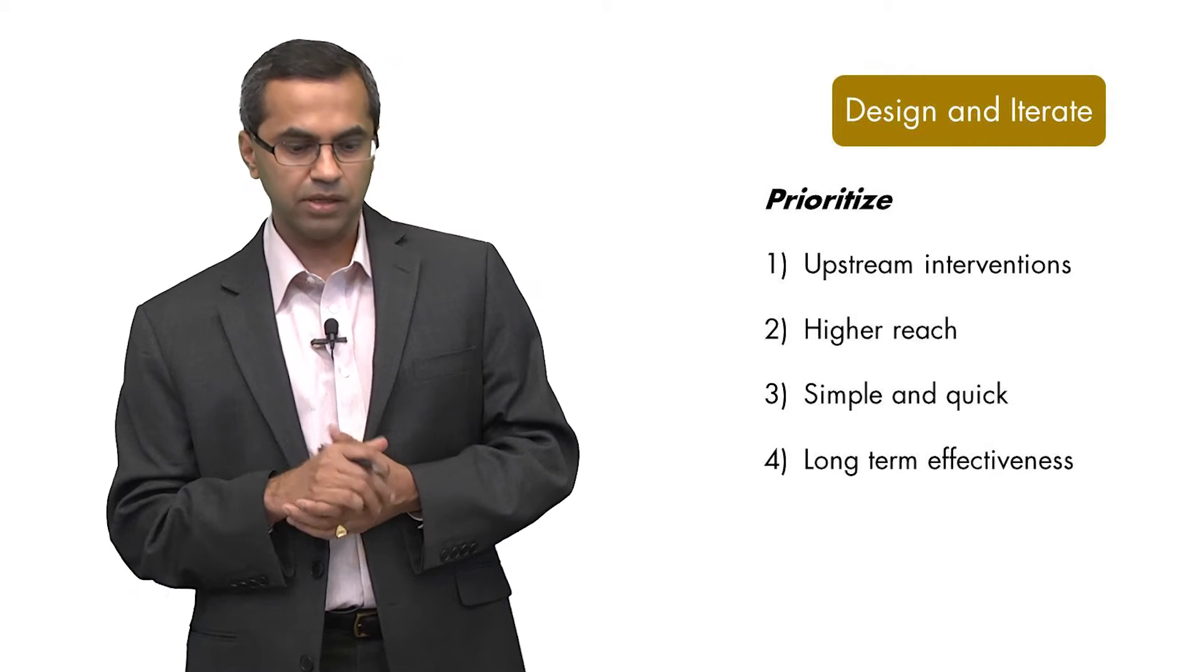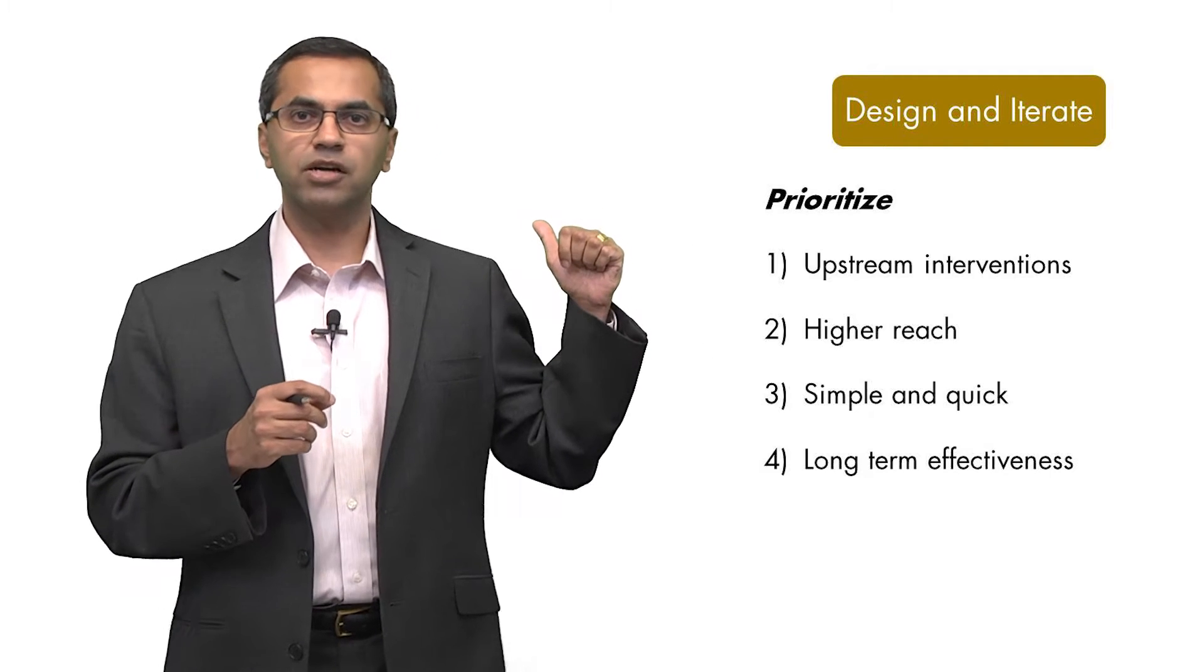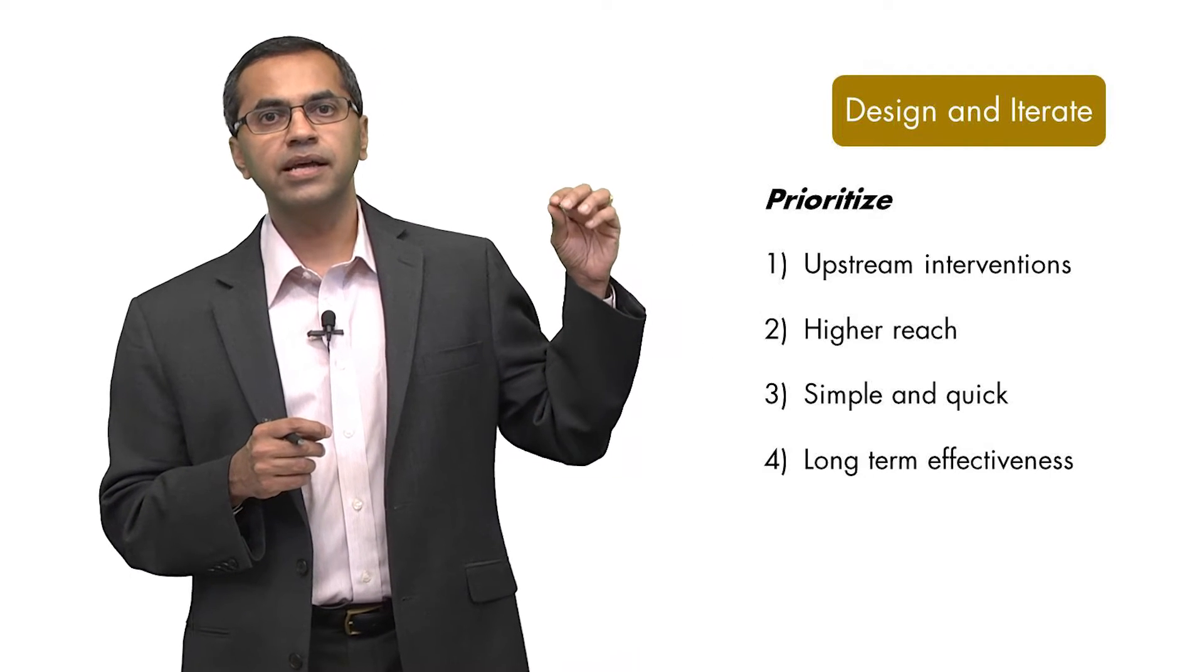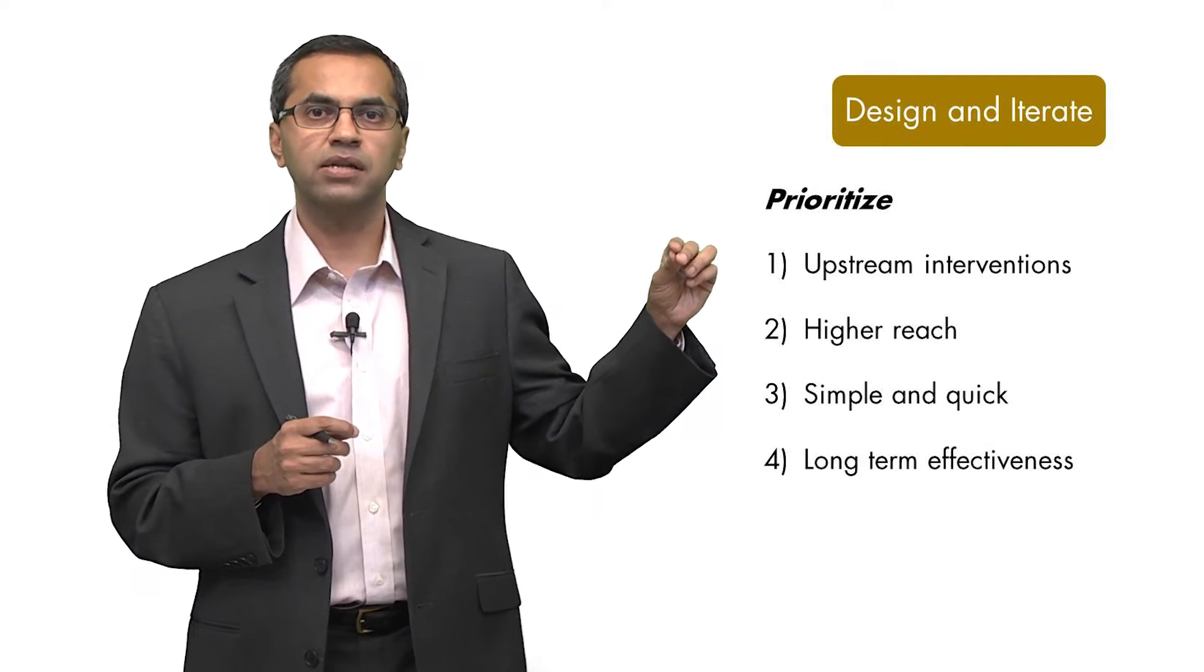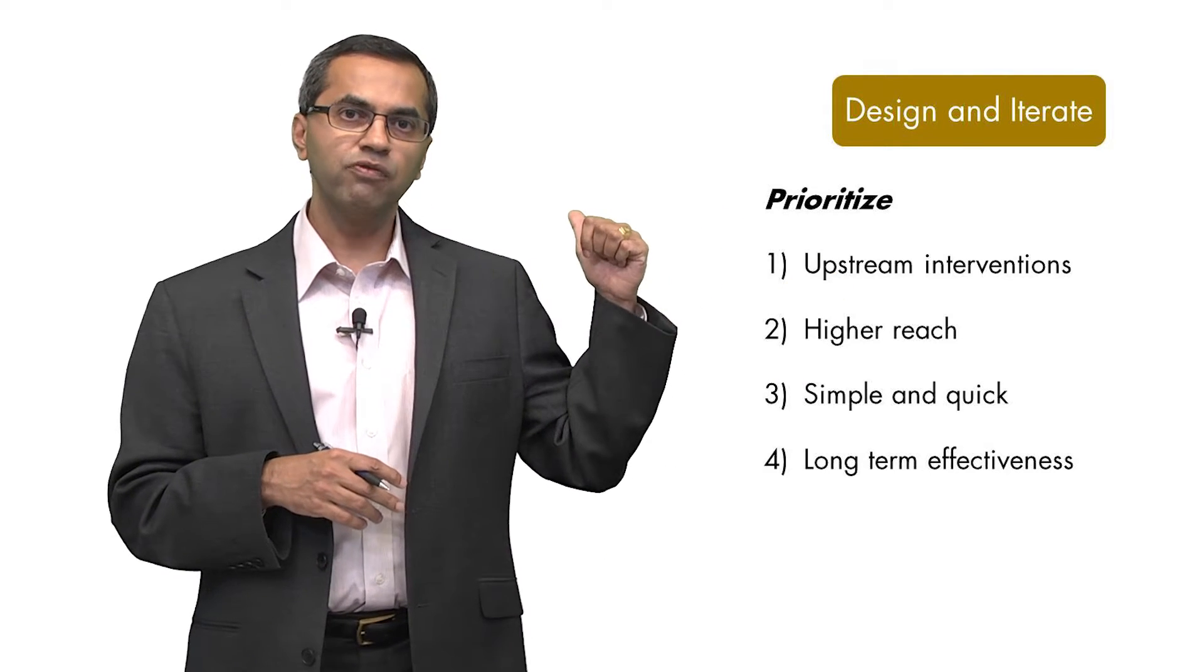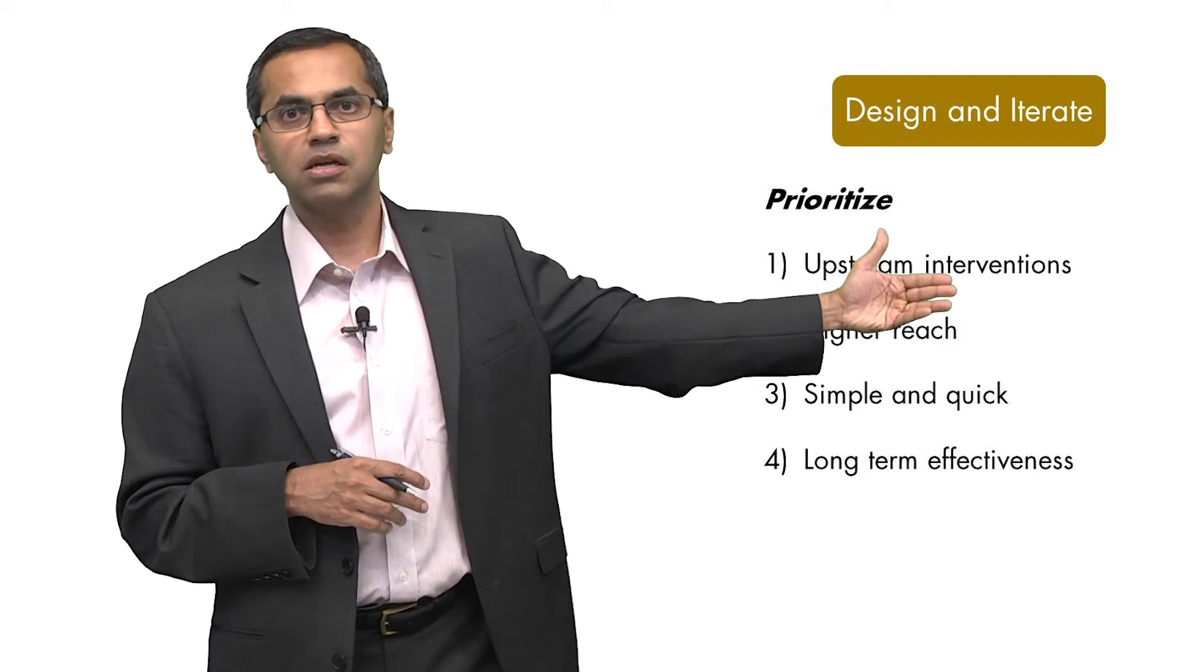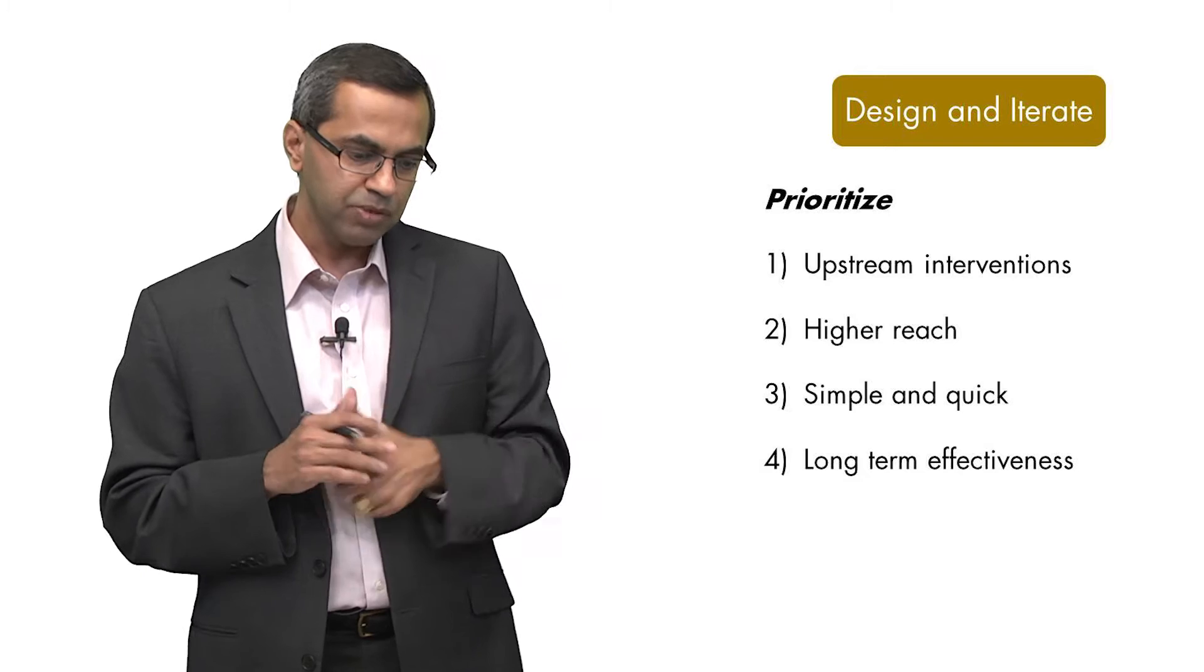There are four simple principles that we identify. Principle number one: nudges that attack a bottleneck in the upstream part of any decision-making process is generally preferred to one that works downstream. If you improve the flow at the top of the process, it is naturally going to increase the flow throughout the rest of the pipeline.